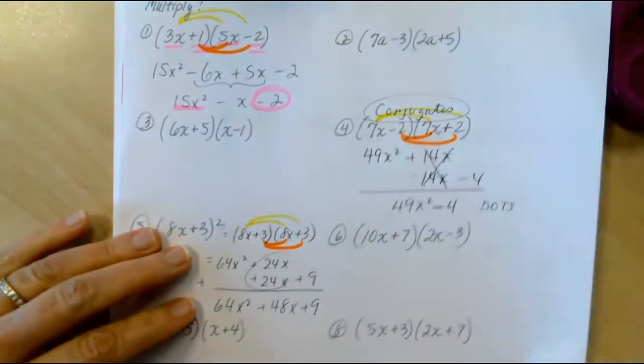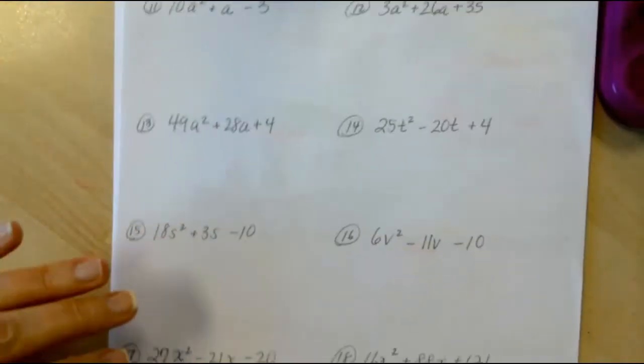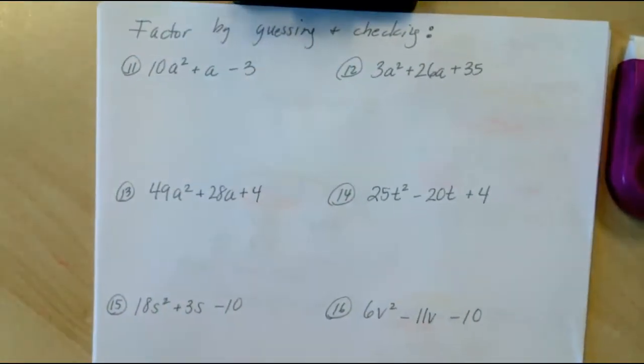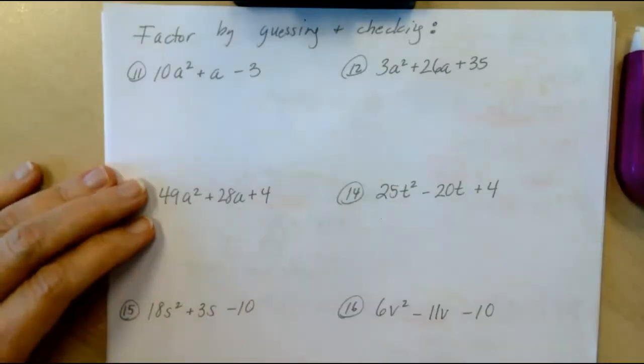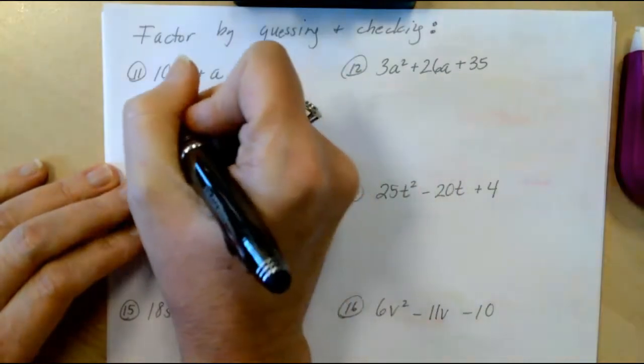When we turn it over on the back, we have factoring by guessing and checking. So when we guess and check, remember we guess intelligently, and then we always follow our guess with a check.